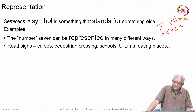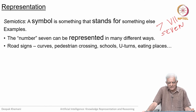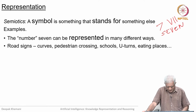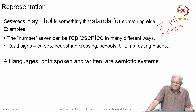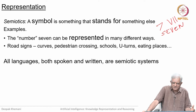There are other symbols that we use in our lives. If you are on a road, you can see road signs like there is a curve ahead, or a pedestrian crossing, or a school ahead, or a U-turn, or eating places. All these are also symbols. The whole study of how symbols are used is the science of semiotics. All languages, whether spoken or written, are semiotic systems, because we have symbols and we ascribe meaning to them.